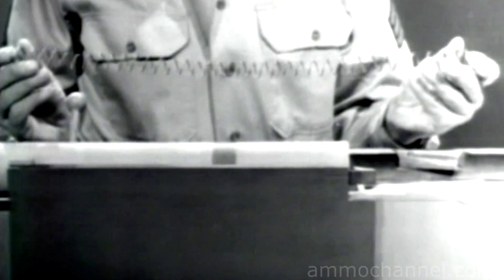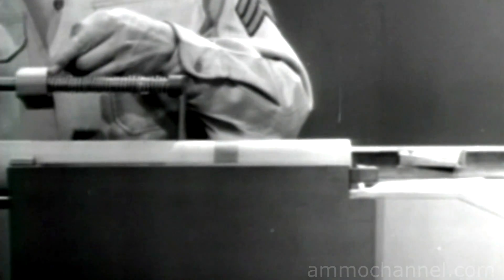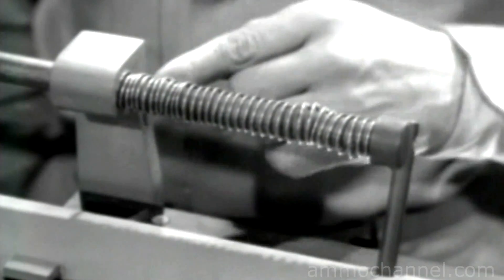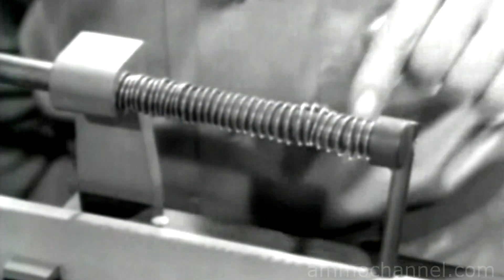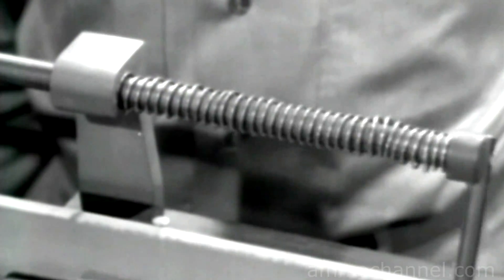To close the bolt, a return spring is again the simplest solution. We've attached the spring so that one end is braced against the receiver. The other end pushes against the bolt, and when the spring expands, it closes the bolt.